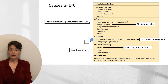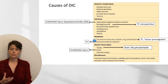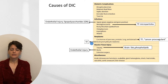Neoplasms to consider are carcinomas, typically adenocarcinomas of the GI tract, gynecologic tract, or lung. These malignancies can release tissue factor or a variety of other factors referred to as cancer procoagulants. Another neoplasm to consider is acute promyelocytic leukemia, where the promyelocytic blasts can release tissue factor into the circulation.